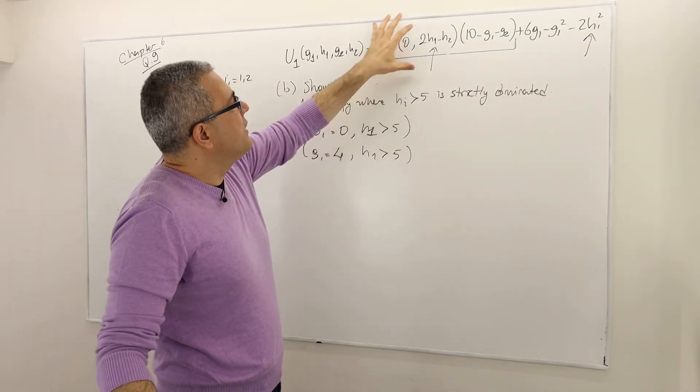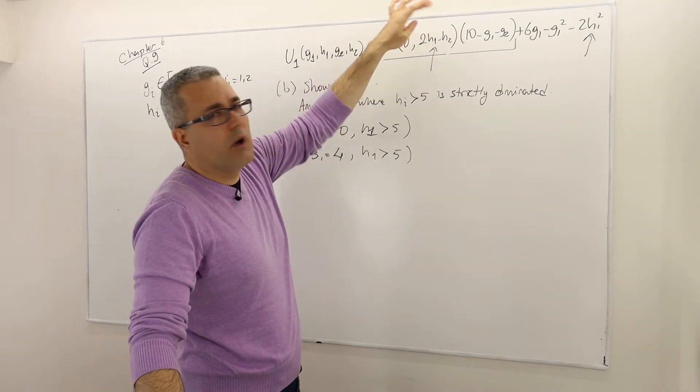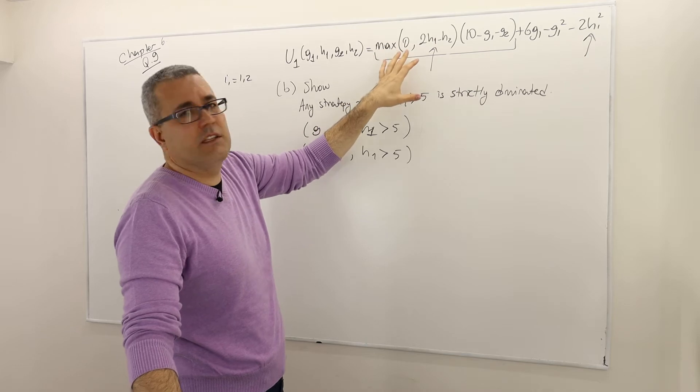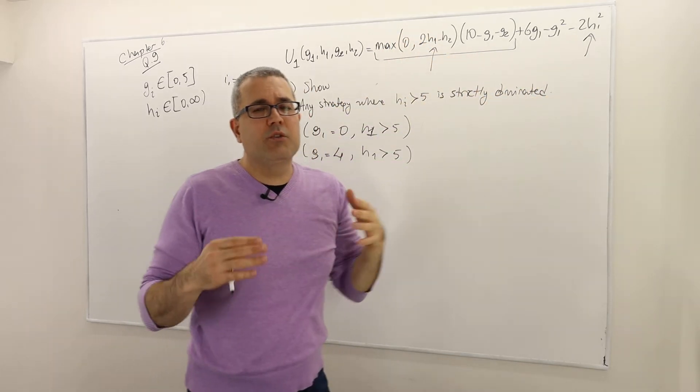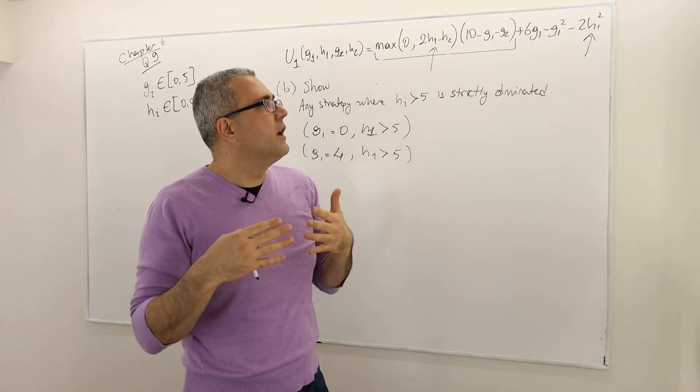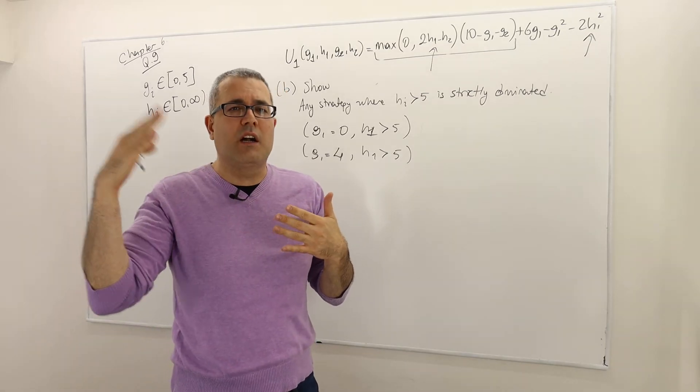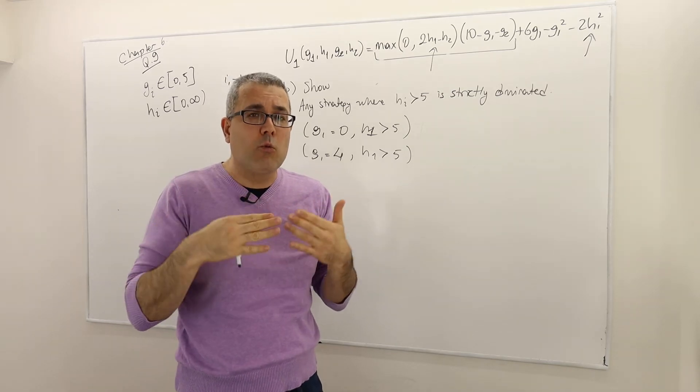So if this term is 0, all right, which is the case when 2H1 minus H2 is less than 0, right? So if this guy is 0, H1 is actually going to reduce the payoff, all right? So that's a good thing because that means higher H1s are actually bad strategies. You should pick lower H1s.